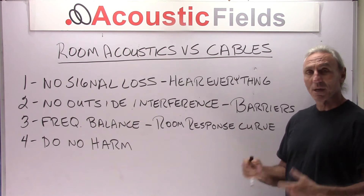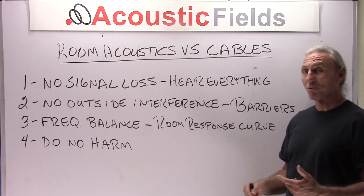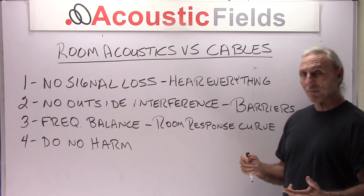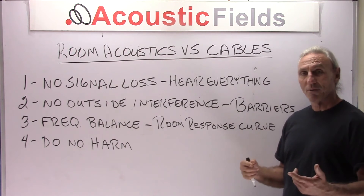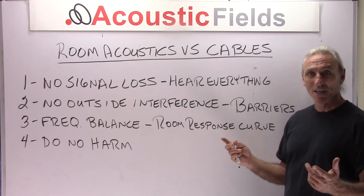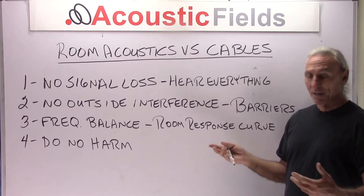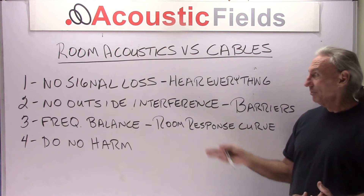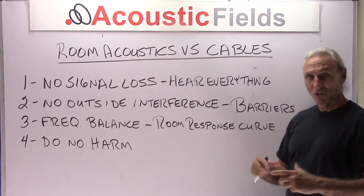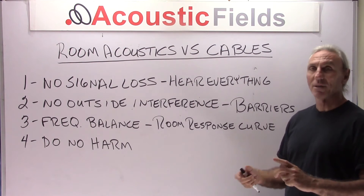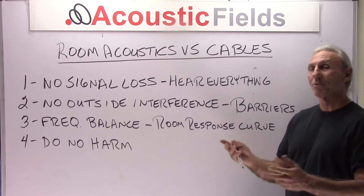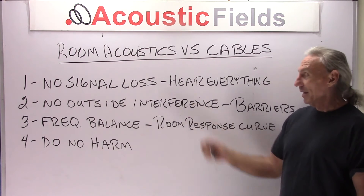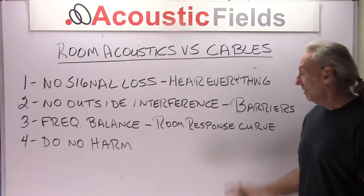The second similarity is no outside interference. Cable manufacturers go to great lengths to guard against interference of all kinds — interference of energy in the air, vibrational problems, equipment issues. They want to make sure that it's shielded correctly, that the current is moving through correctly and it's not picking up any extraneous information it doesn't need.